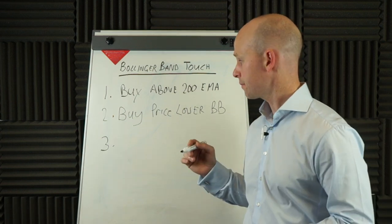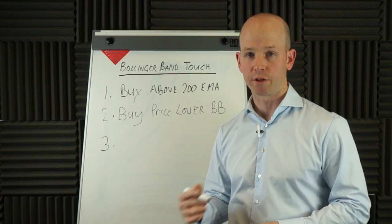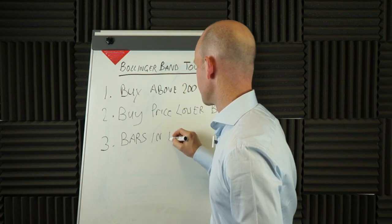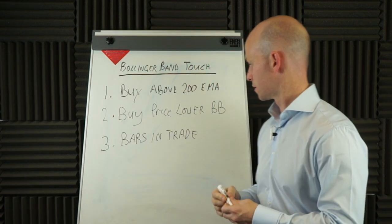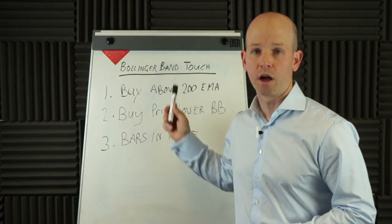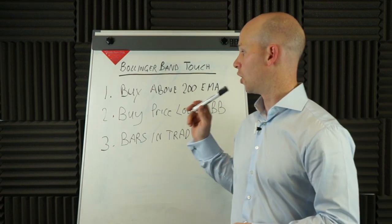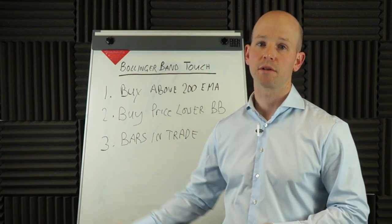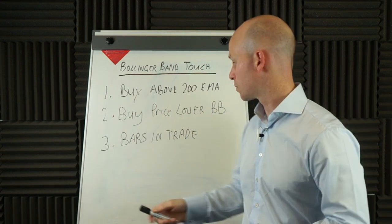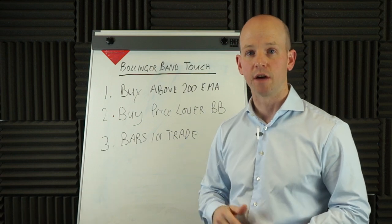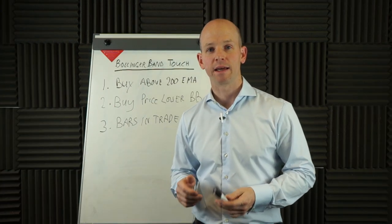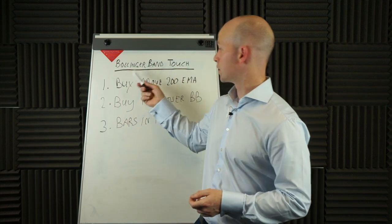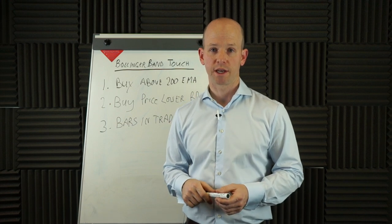The additional exit is simply counting the number of bars you're in the trade since you entered — we'll call it bars since entry. We're going to be testing different time frames. So if we're entering on a 30-minute time frame and want to exit after five bars, that's literally five 30-minute bars. We could test a daily chart and exit after three bars — that'd be three days. Let's now go over to the computer where I'll program it. This Bollinger Band Touch strategy — I have no idea whether it's going to work yet because I haven't tested it.